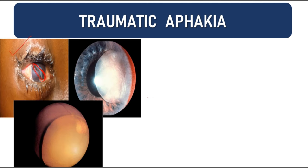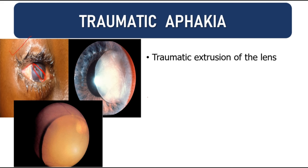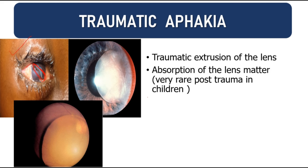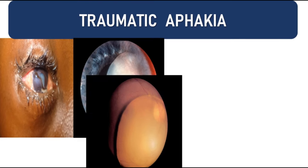The second type is traumatic aphakia, which occurs after trauma. A deep penetrating wound through the cornea can damage the lens and surrounding structures, sometimes causing extrusion of the lens through the cornea. Post-trauma, very rarely the lens matter gets absorbed on its own, and there may also be traumatic dislocation of the lens.